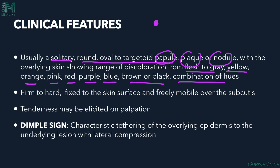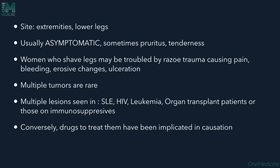The swelling is firm to hard in consistency. It is fixed to the overlying skin surface but freely mobile over the subcutaneous tissue — fixed above, movable below. Tenderness may be elicited on palpation. A characteristic sign is the dimple sign: lateral compression of the nodule causes tethering of the overlying epidermis to the underlying lesion, forming dimples on the surface.